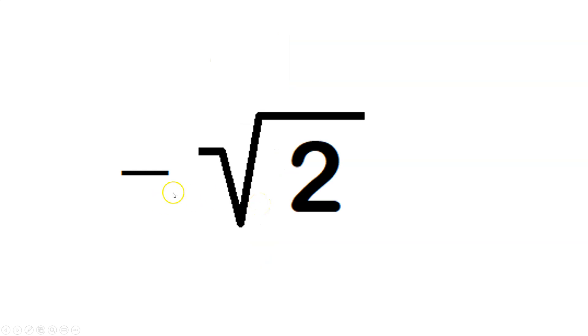And by keep-change-flip, it just ends up being -√2. Please be sure to hit that like button, friends.